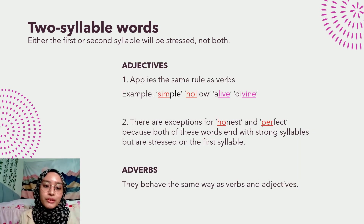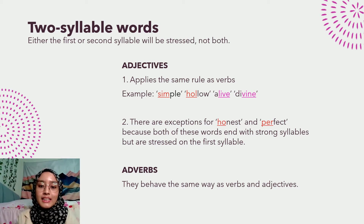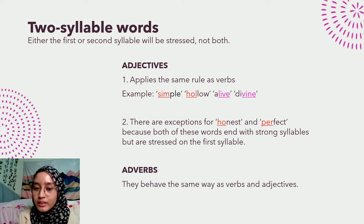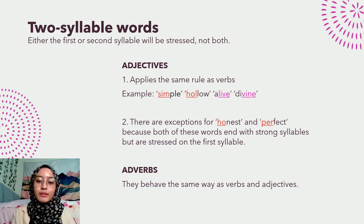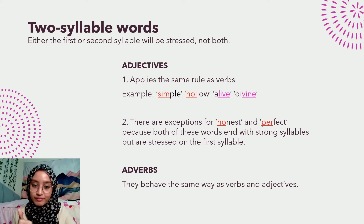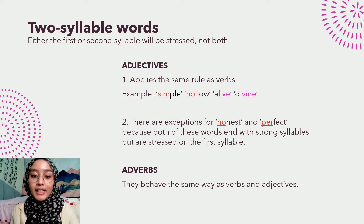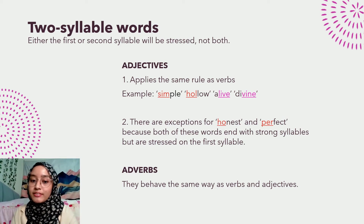For adjectives, the rule is basically the same as verbs, but there are exceptions for the words 'honest' and 'perfect' because both of these words end with strong syllables but are stressed on the first syllable — 'honest', 'perfect'. And finally, for adverbs, they are pretty much the same case as verbs and adjectives.